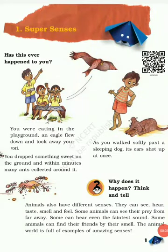Hello students, today we are going to study Chapter 1 of NCERT Class 5 EVS. The chapter name is 'Super Senses.' In this video, we will see the super sense of smell and the super sense of sight. But before starting the chapter, let me tell you about sense organs — what are sense organs and how many sense organs do we have.